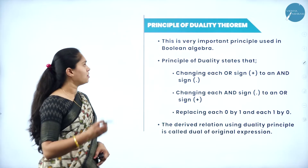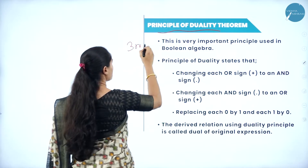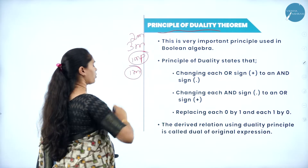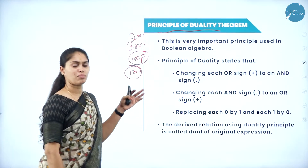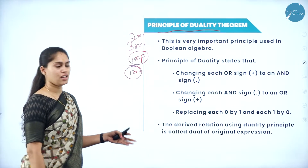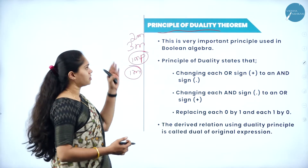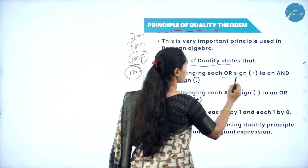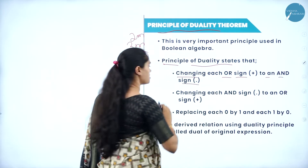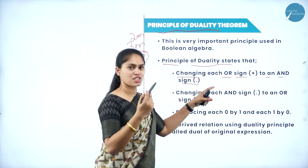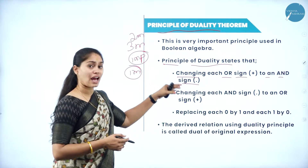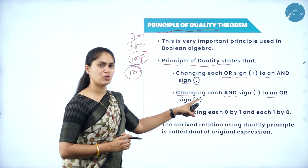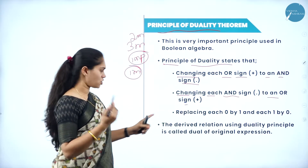Next we will see the principle of duality theorem, which is very important — it can be asked for 2 or 3 marks. You can also expect a question like 'write the dual of 1 plus x equals y.' In the principle of duality, we change each OR sign (plus) to an AND sign (product), we change each AND sign to an OR sign, and we replace each 0 by 1 and each 1 by 0. The derived relation using this duality principle is considered the dual of the original expression.